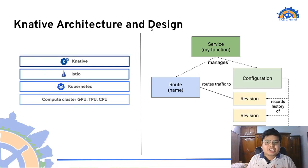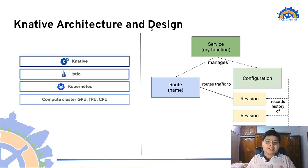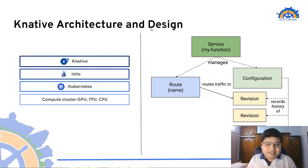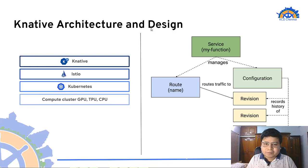Now let's understand the architecture of Knative. We have the compute cluster, on top of which Kubernetes is installed. Before installing Knative, we need a networking layer — in this example we use Istio, but you can use other applications like Contour. Then we install the Knative application. With Knative, we can deploy applications on Kubernetes without having to write deployment or service YAML files. The most important thing in Knative is the Knative service file, where we specify the container image to deploy, the environment variables, and the parameters.